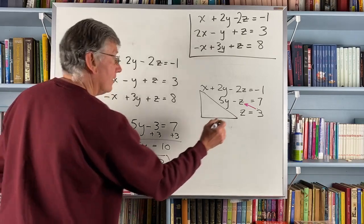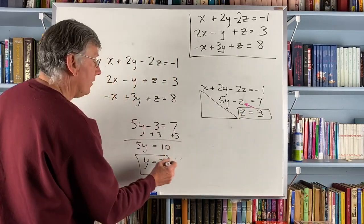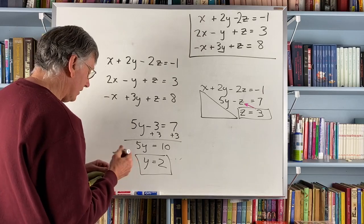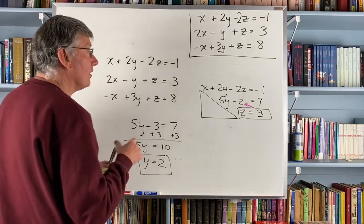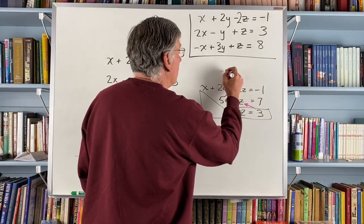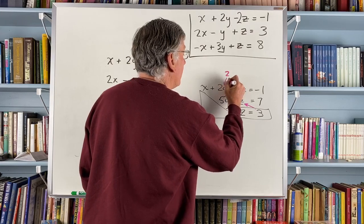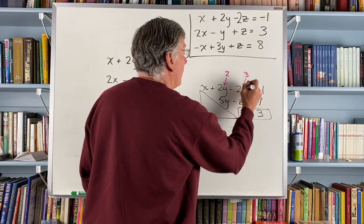So I've got z is 3, y is 2, and now I can take both of these and put them in here. So I'm going to put 2 right there and 3 right there.